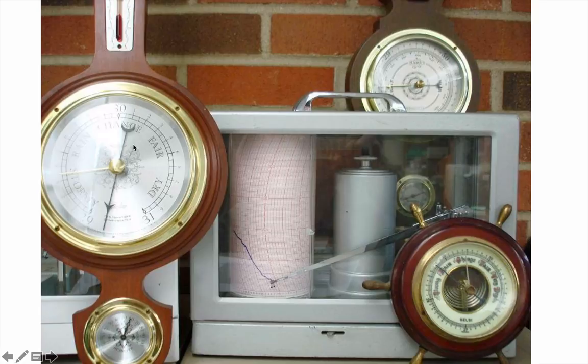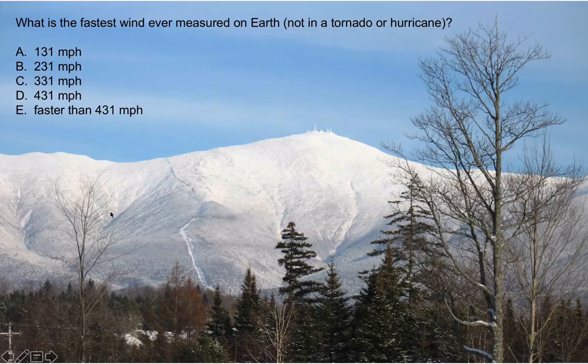When we talk about pressure, it's really about its relationship to wind. Here's a question: what is the fastest wind ever measured on Earth, not in a tornado or hurricane? Is it 131, 231, 331, or faster than 431 miles an hour?